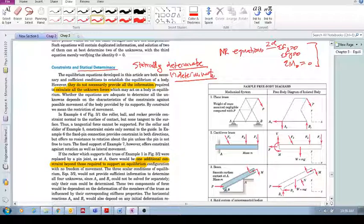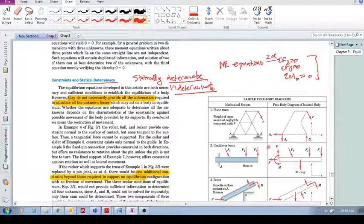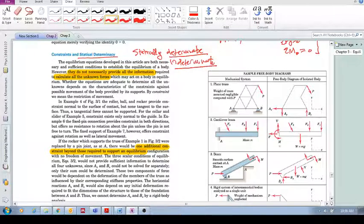The number of unknowns that we have in our system: if the number of unknowns equals the number of equations, it's statically determinate. If the number of equations is less than the number of unknowns, we have a statically indeterminate system. So let's look at some examples here in figure 3.2.